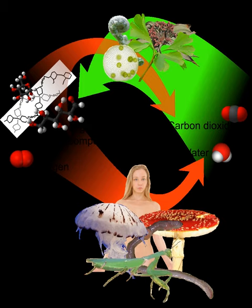Autotrophs are fundamental to the food chains of all ecosystems in the world. They take energy from the environment in the form of sunlight or inorganic chemicals and use it to create energy-rich molecules such as carbohydrates. This mechanism is called primary production. Other organisms, called heterotrophs, take in autotrophs as food to carry out functions necessary for their life. Thus, heterotrophs — all animals, almost all fungi, as well as most bacteria and protozoa — depend on autotrophs, or primary producers, for the energy and raw materials they need.